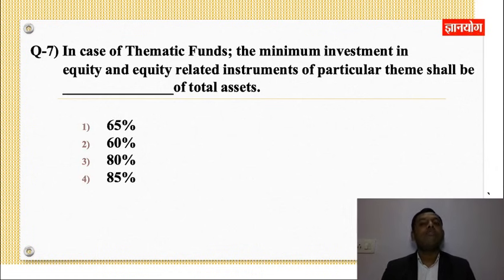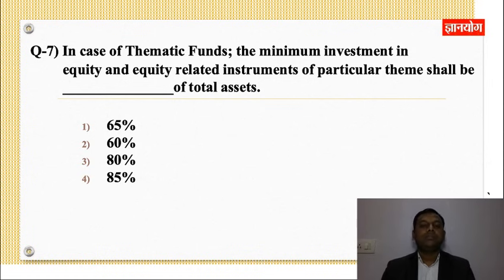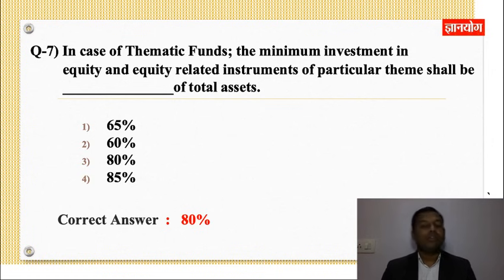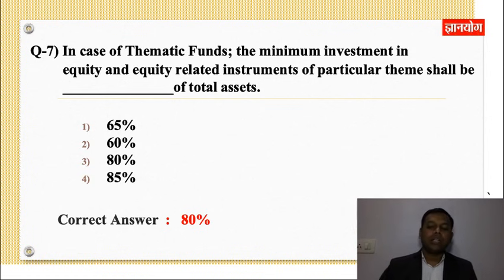Question No.7: In case of thematic funds, the minimum investment in equity and equity related instruments of a particular theme shall be __ percentage of total assets? Options: 65%, 60%, 80%, 85%. Correct answer: 80%. Thematic funds में equity and equity related instruments — particular theme में — 80% of total assets होना चाहिए। Remaining 20% में debt, liquid cash या अन्य रख सकते हैं।